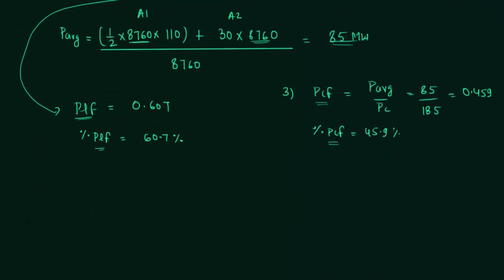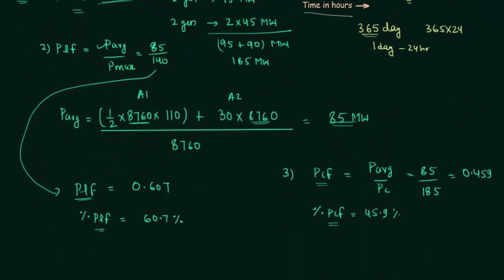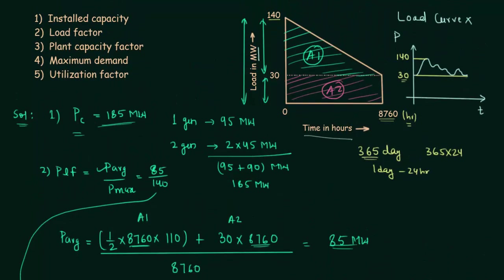Let's solve the fourth part: maximum demand. There is no need to perform any calculation. You can clearly see that the maximum demand is 140 megawatt, which we also used while calculating the second and third parts.